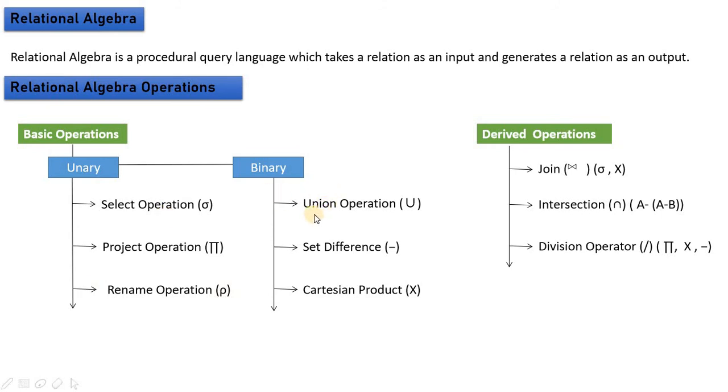Binary operations include union, set difference, and cartesian product. These are basic operations. The other type is derived operations, which are different combinations of operations we can perform.